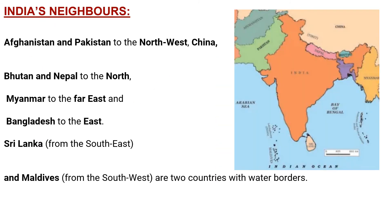Here is a map of India and all its neighboring countries. The boundaries of some neighboring countries touch the Indian boundary, while others do not. India occupies an important strategic location in South Asia. India shares its land boundaries with Pakistan and Afghanistan in the northwest, China, Nepal, and Bhutan in the north, and Myanmar and Bangladesh in the east.